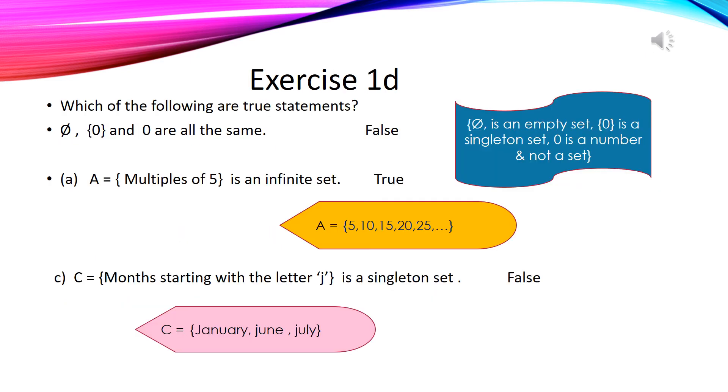Let's solve exercise 1d. In this exercise we will examine which of the following are true statements. As you can see in the first statement phi, singleton set and number zero are not the same. Because phi is an empty set, second value is singleton set, and zero is just a number, not a set.